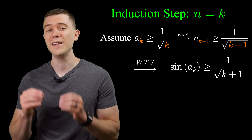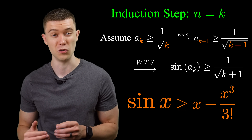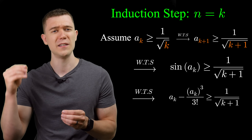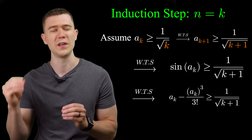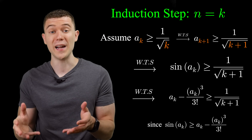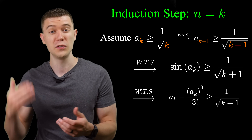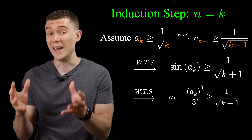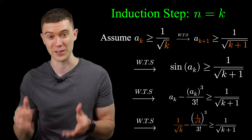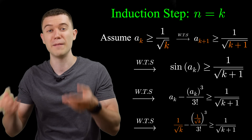Using our earlier argument, sine x is greater than or equal to x minus x cubed over 3 factorial. So if we can show a sub k minus a sub k cubed over 3 factorial is greater than 1 over the square root of k plus 1, that implies what we want. Now we can use the induction hypothesis: substituting a sub k is greater than or equal to 1 over root k, we need to show 1 over root k minus 1 over root k cubed over 3 factorial is greater than 1 over the square root of k plus 1.